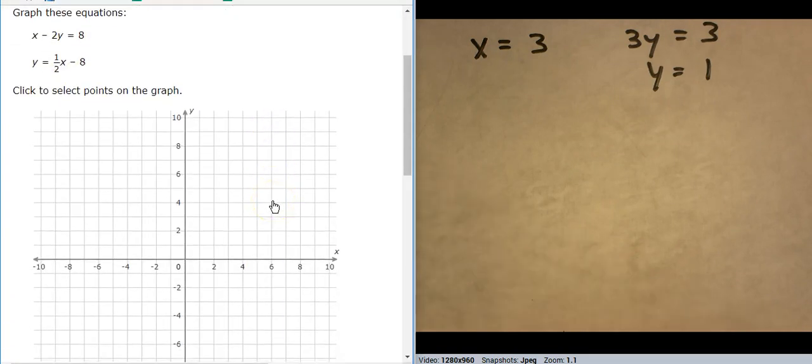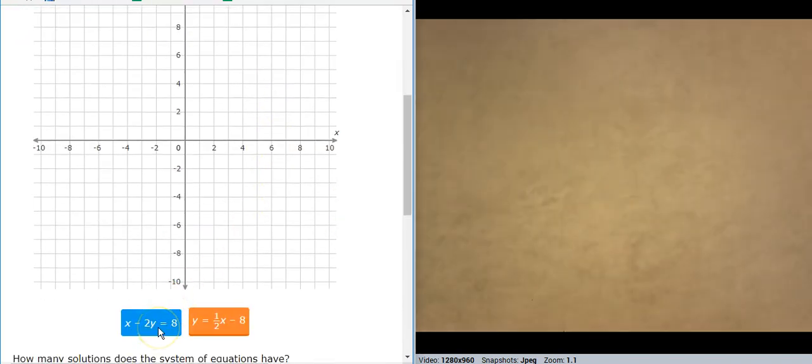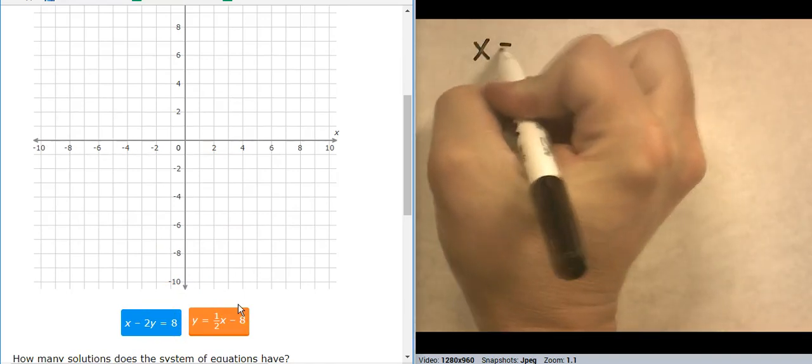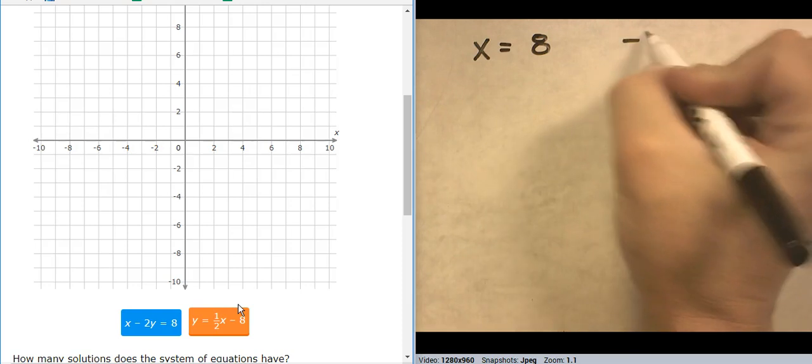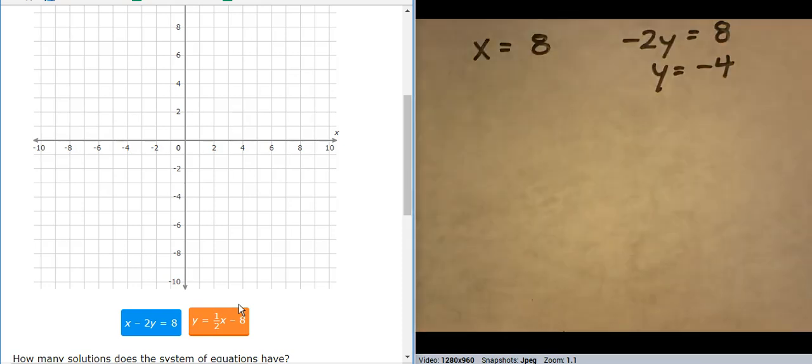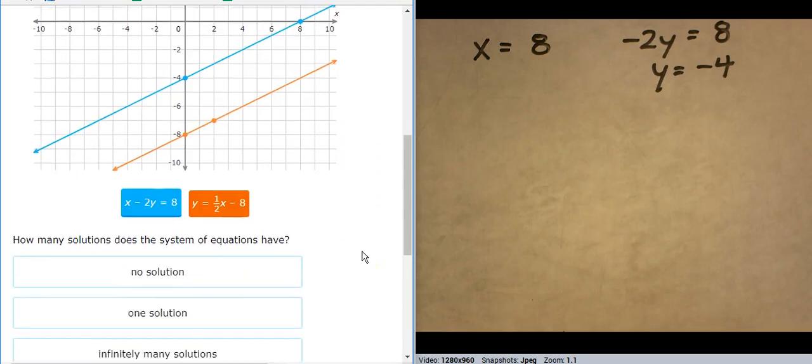OK. So I have one that's in standard form. So x equals eight. Negative two y equals eight. So y equals negative four. Can I graph that? X equals eight. Y equals negative four. This one starts at negative eight. And goes up one over two. It looks like parallel lines, so no solution.